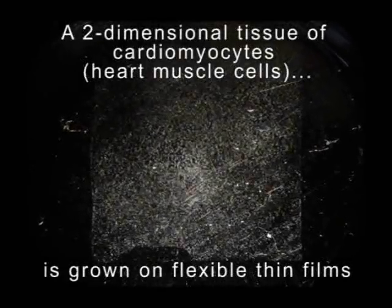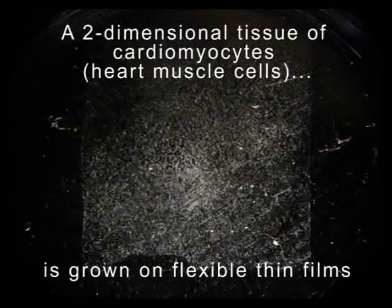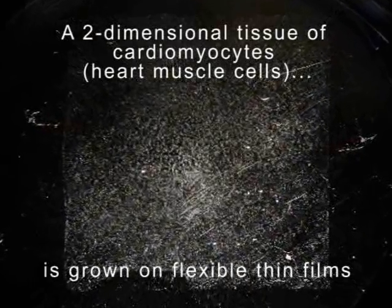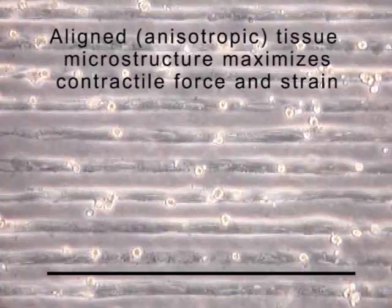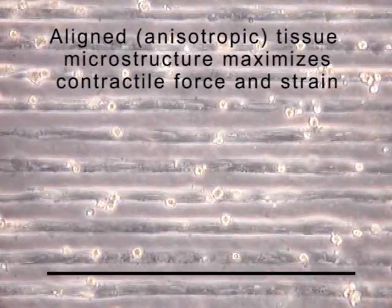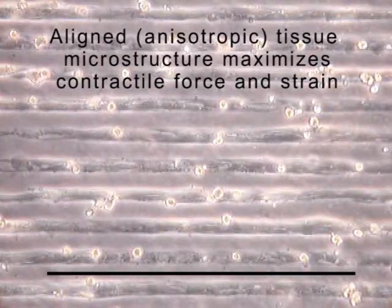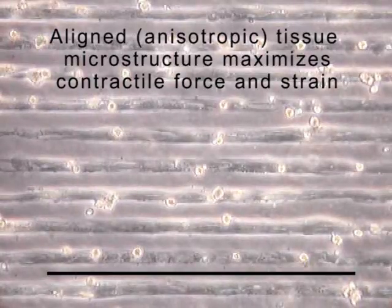We start by growing a two-dimensional tissue of cardiomyocytes, or heart muscle cells, onto a thin film elastomer of polydimethylsiloxane. The cardiomyocytes are microengineered into 20 micron wide muscle strips using soft lithography. We can see that the cardiomyocytes are well aligned into an anisotropic tissue where the microstructure maximizes contractile force and strain along a single axis.